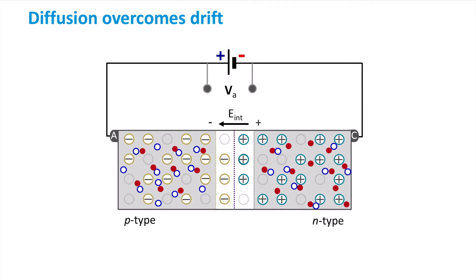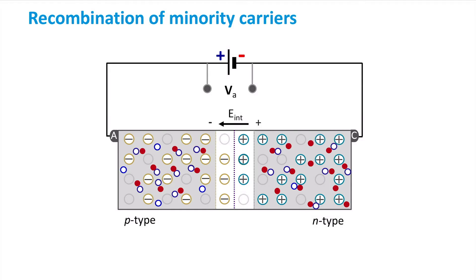These extra minority carriers will diffuse deeper into the quasi-neutral regions. This is, of course, not a stable situation for the minority carriers that find themselves in the sea of majority carriers. The minority carriers will sooner or later recombine with the majority carriers in the quasi-neutral regions.